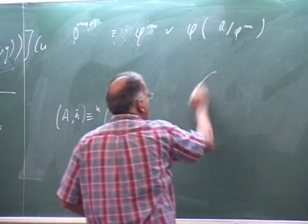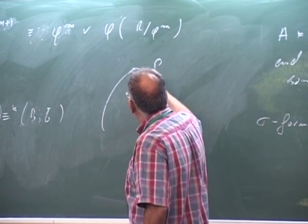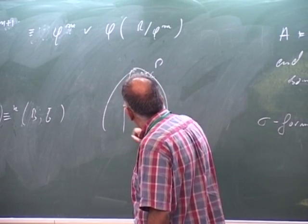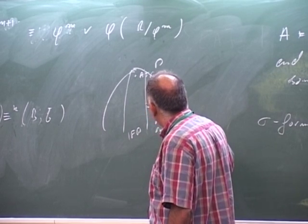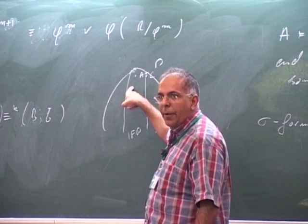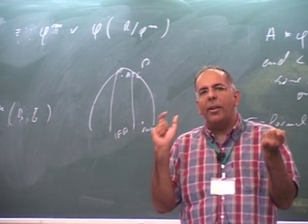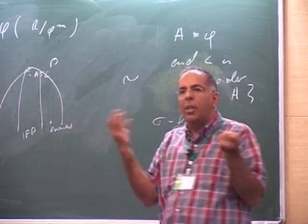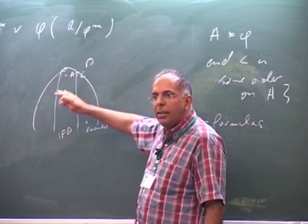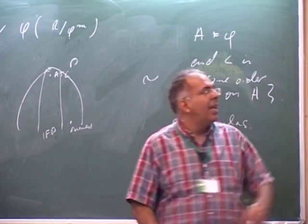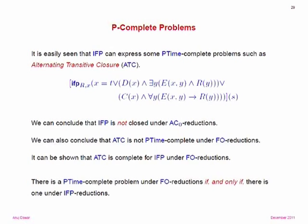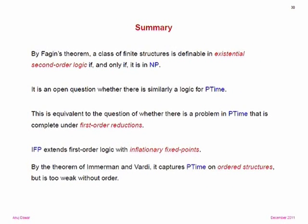One way to think about this: we have the class P with ATC as a P-complete problem. IFP picks out a vertical slice of this complexity class — a slice closed under first-order reductions but not under AC0 reductions — and evenness sits outside it. The important distinction between these reductions is whether they are order invariant. We want reductions that are order invariant. Replacing FO with IFP: is there a problem in P complete under IFP reductions? That too is equivalent to the question: is there a logic for P?